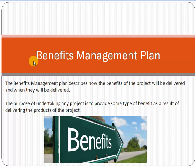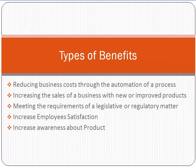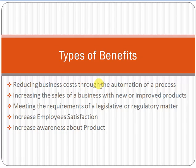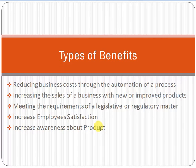There could be different types of benefits which a company or a person wants to achieve through the project. For example: reducing business cost through automation of a process, increasing the sales of a business with a new or improved product, meeting the requirement of a legislative or regulatory matter, increasing employee satisfaction, or increasing awareness about a product. These are just sample examples of benefits which can be achieved through a project.